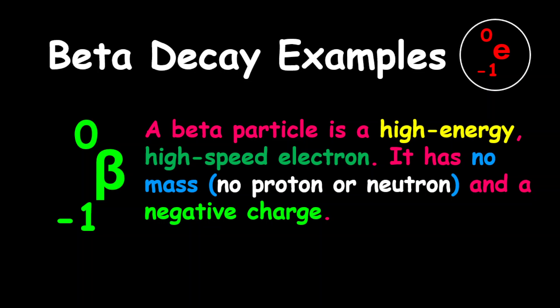A beta particle is a high-energy, high-speed electron. It has no mass, so therefore there is no proton or neutron. Point to note is that a beta particle has a negative charge.